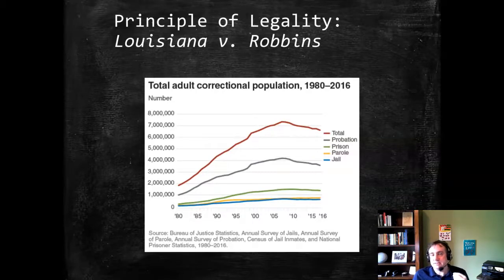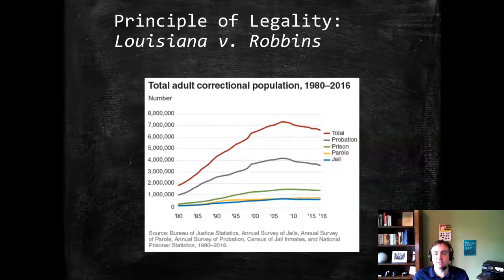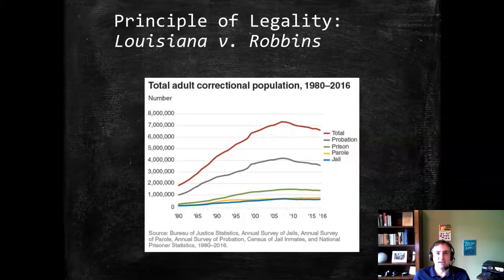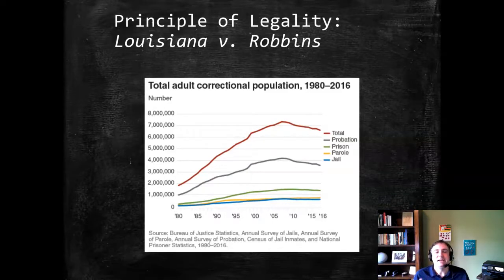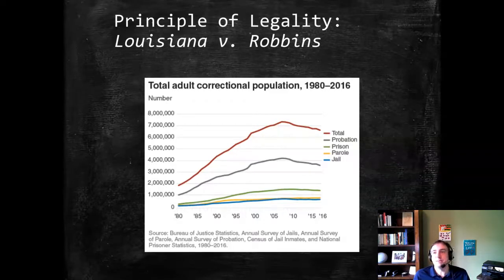We'll revisit some of these dynamics when we get to a subsection called mistake of law, which has to do with a defendant's awareness of the statute — which in almost all circumstances is a very narrow exception and is irrelevant under our law. You might know the famous maxim: ignorance of the law is not a defense. I just want to give you a little foreshadowing that we will revisit this. So the principle of legality is a constraint on interpretation, meaning that the law has to be defined beforehand. Judges cannot create what we call new common law crimes.